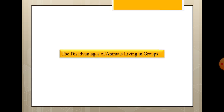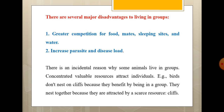As I have told you, in the previous topic we read about the advantages of group living: mate availability, safety, food sharing, and factors that ensure survival. But there are also disadvantages, mainly greater competition for food, mates, sleeping sites and water, as well as increased parasite and disease load. There are also incidental reasons why some animals live in groups, related to concentrated valuable resources that attract individuals.